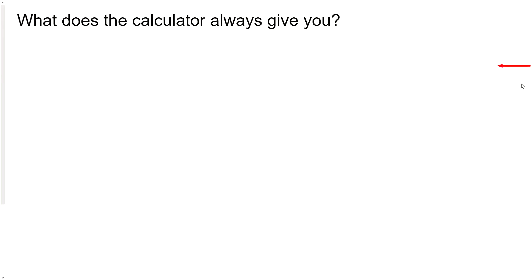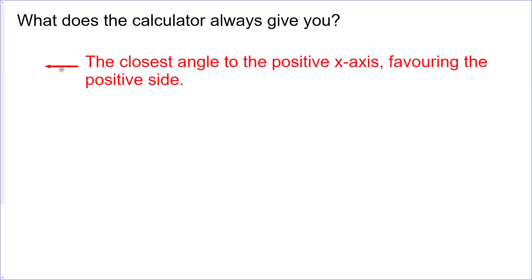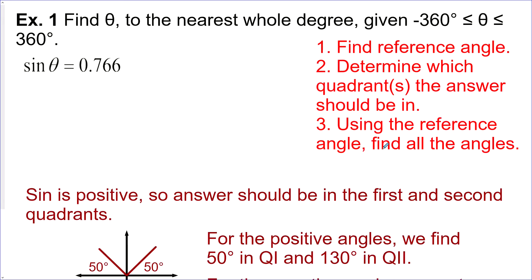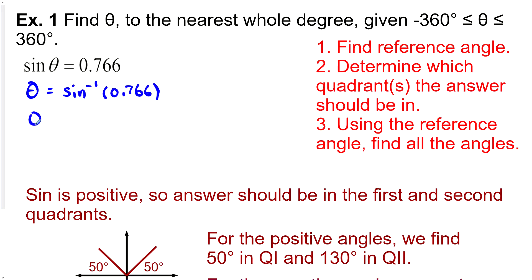So what does your calculator always give you? It looks like the closest angle to the positive x-axis, favoring the positive side. Now that we know what our calculator is giving us, let's find θ to the nearest whole degree, given that it's between −360° and 360°, and sine θ = 0.766. We solve for θ by taking the sine inverse of both sides and get θ = 50°.